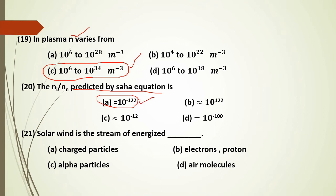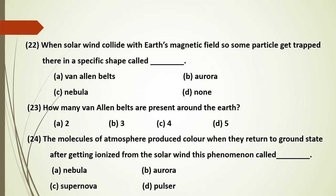Solar wind is a stream of energized charged particles. When solar wind collides with the Earth's magnetic field, some particles get trapped in a structure called the Van Allen Belts.